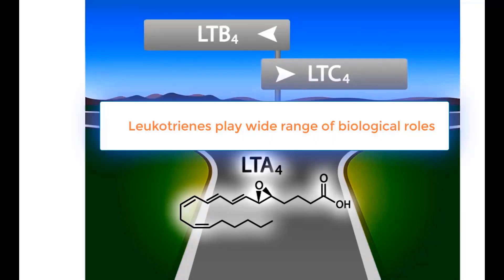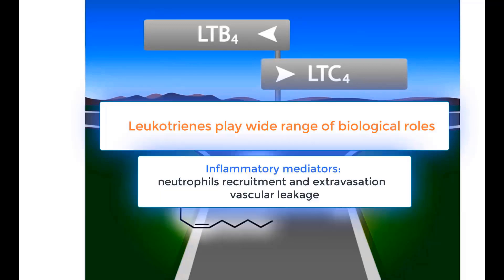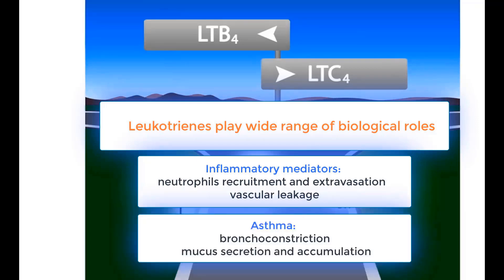Indeed, leukotrienes play a wide range of biological roles. They are important inflammatory mediators, as they enhance inflammatory neutrophil recruitment and extravasation and increase vascular leakage. Additionally, they play negative roles in bronchial asthma as they induce bronchoconstriction and stimulate mucus production and accumulation in respiratory pathways.